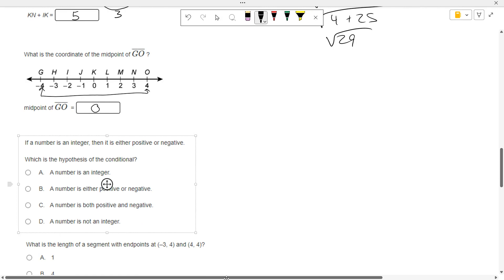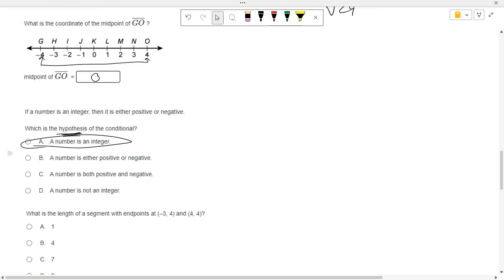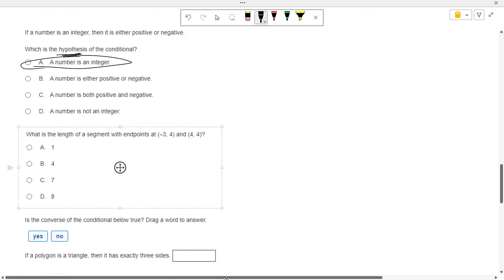If a number is an integer, it is either positive or negative. What is the hypothesis of that? If a number is an integer, a number is an integer, the first part is the hypothesis. The last part is the conclusion.